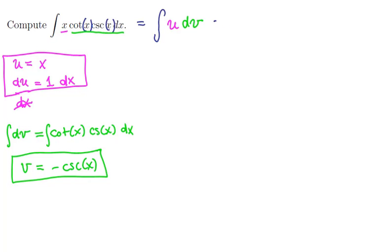According to integration by parts, this is equal to u times the function v, minus the integral of that same function v times the differential of u.